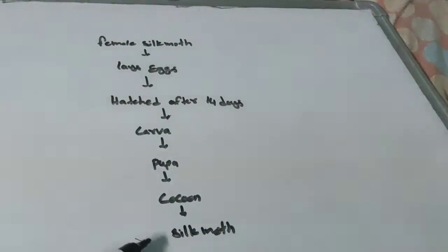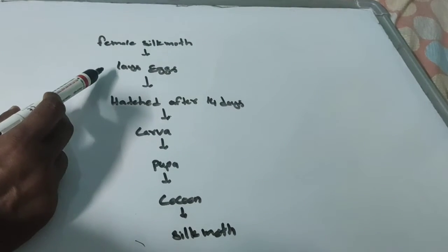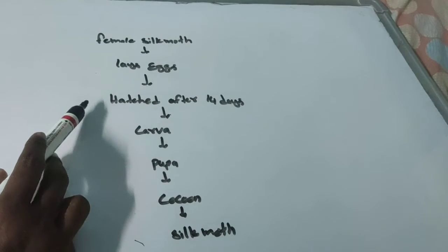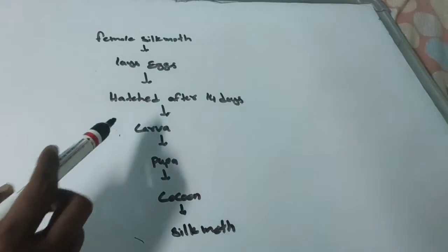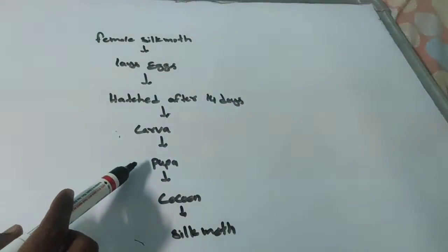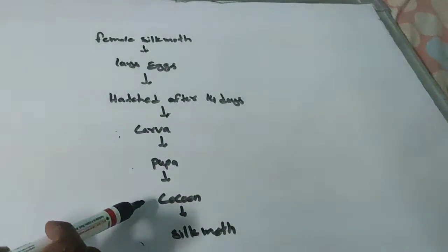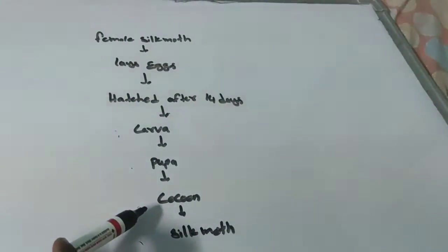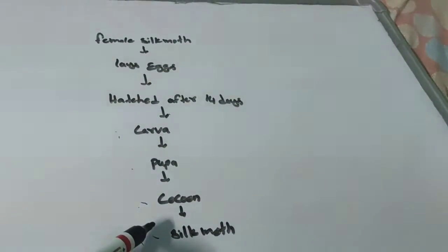This is the life cycle of the silkworm. The female silk moth lays eggs, and the eggs hatch after around 14 days. The hatched eggs form larva, which grows into pupa. The pupa weaves a net produced by the salivary glands, moving its head in the shape of eight, forming a cocoon. The silkworm lives inside the cocoon for some time, then breaks it and comes out, growing into the silk moth.